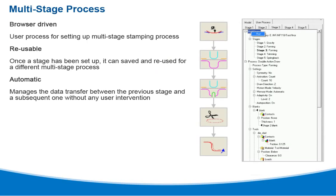The multistage process is a browser-driven user process for setting up multistage stamping processes. It's reusable — once a stage has been set up, it can be saved and reused for a different multistage process. It also manages the data transfer between the previous stage and a subsequent one without any user intervention.